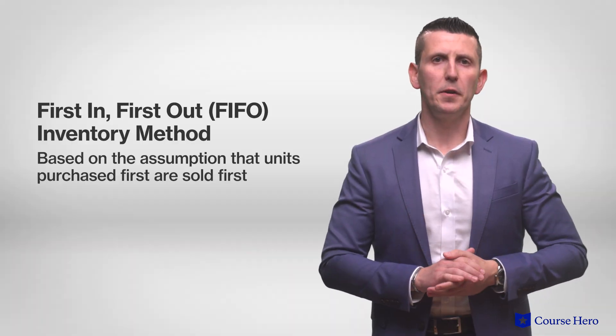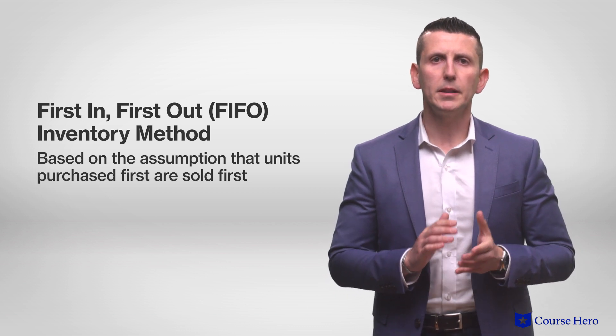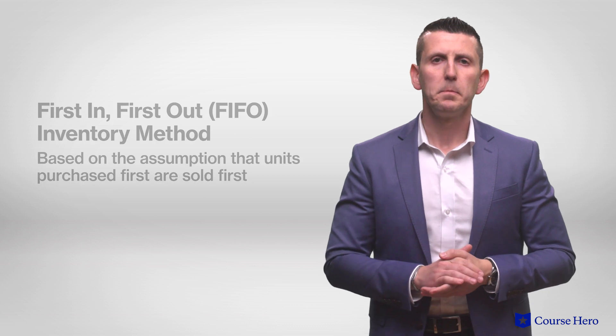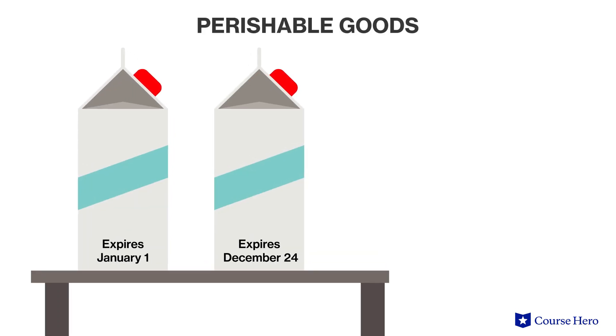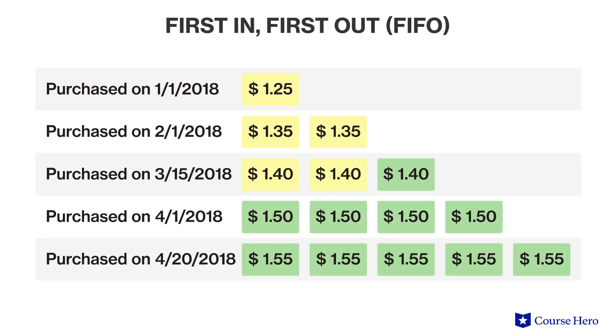The first in, first out (FIFO) inventory method is based on the assumption that the units purchased first are sold first, therefore leaving the most recently purchased units in ending inventory. The flow of costs under FIFO typically follows what is considered a traditional way to think of how goods flow. A great example is perishable goods — bread and milk expire very quickly, so when adding new bread and milk to the shelf, it's important to sell the older ones first. Remember that the inventory cost flow assumption is an assumption: if a company uses FIFO, it is assuming, for accounting purposes, that older units are sold first, which may not be the case if we actually track the units sold.